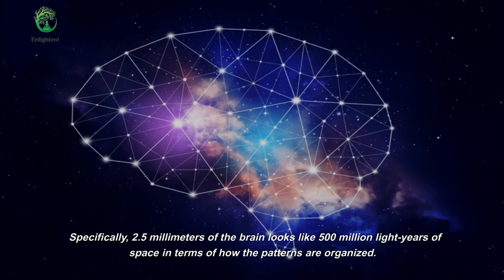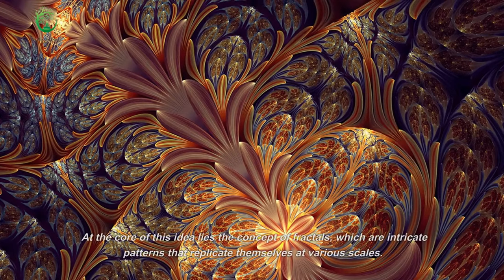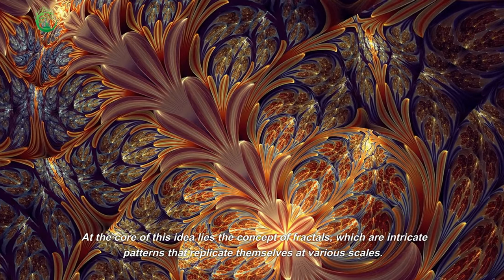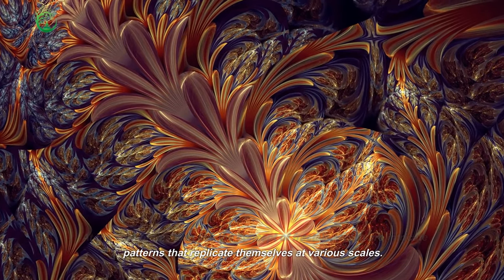Specifically, 2.5 millimeters of the brain looks like 500 million light years of space in terms of how the patterns are organized. At the core of this idea lies the concept of fractals, which are intricate patterns that replicate themselves at various scales.